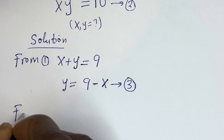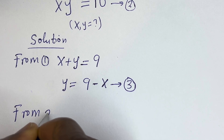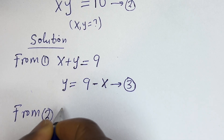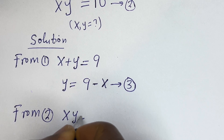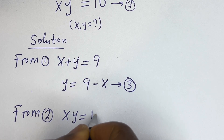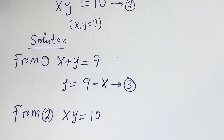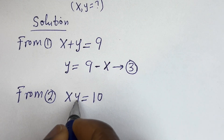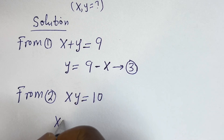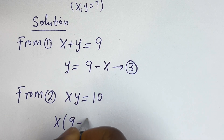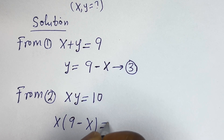From equation 2, x times y is equal to 10. Let's substitute for y. We have x bracket 9 minus x is equal to 10.